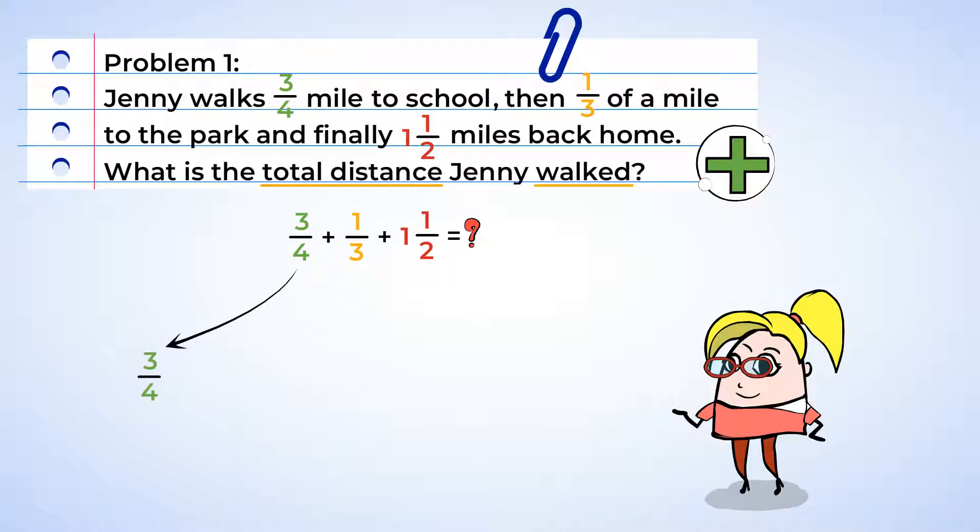Now let's change all the fractions to have 12 as a denominator. Three fourths multiplied by three over three gives us an equivalent fraction of nine twelfths. Now one third multiplied by four over four is four twelfths. And finally, one half times six over six equals six twelfths.